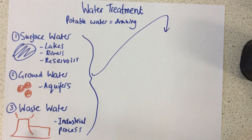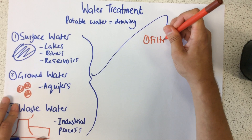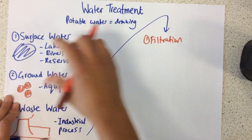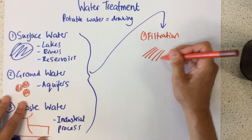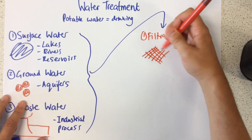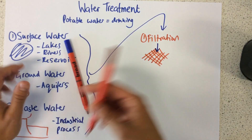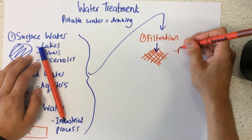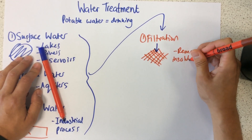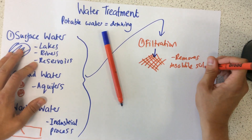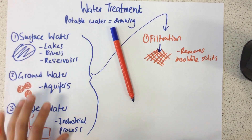In order to do that, there are three different steps we need to know about. The first step is filtration. We get this water from these sources and first of all we pass it through filters. This removes a lot of the large insoluble solids — things like twigs and gravel — whatever might be in the water gets removed by the filtration process.